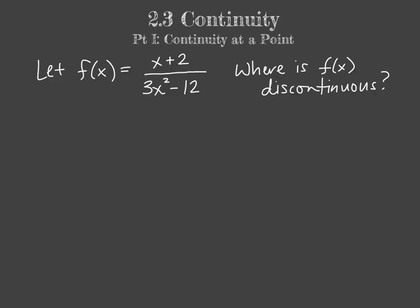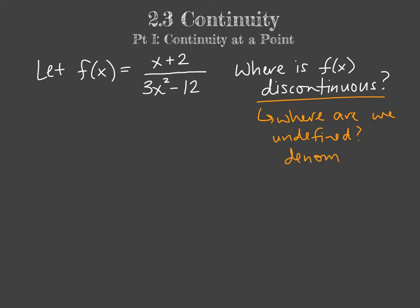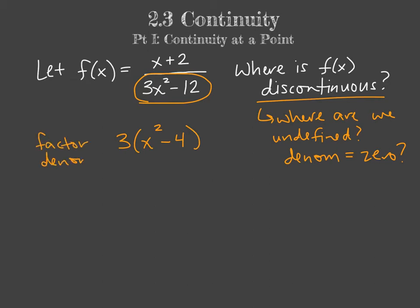So we've looked at a graph and talked about continuity at a point. But what if we just look at something algebraically without graphing? When we have a rational function with x in the denominator, we are discontinuous when the denominator is zero — we cannot divide by zero. So what this is really asking is: where are we undefined? In this specific case, because it's a rational function, where is the denominator equal to zero? Let's factor the denominator — we don't care about the numerator. Taking out a 3, we're left with x squared minus 4.